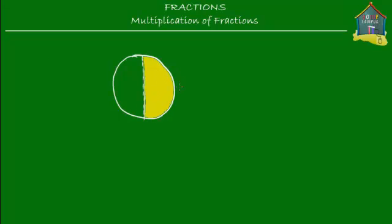So you have this half pizza, and then what you do is you take this half pizza — your slice — and you give half of that to your friend Annie. So you make this pizza into half and you give this half over here, which I'm shading in red, to Annie. So you give this shaded portion in red to Annie.